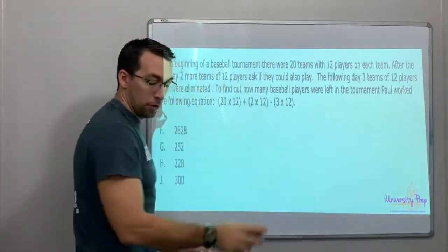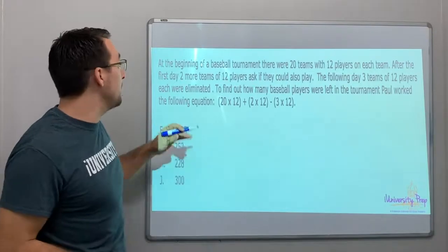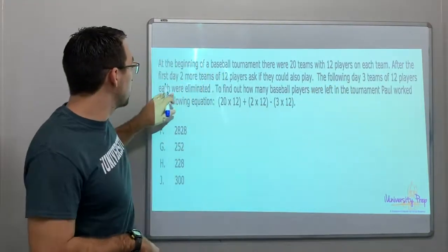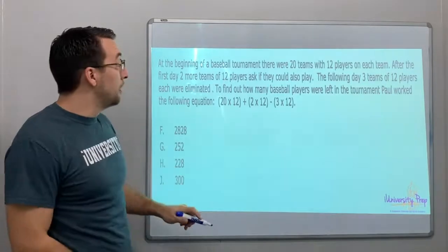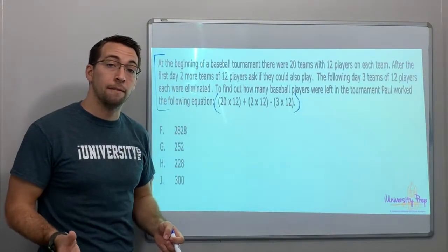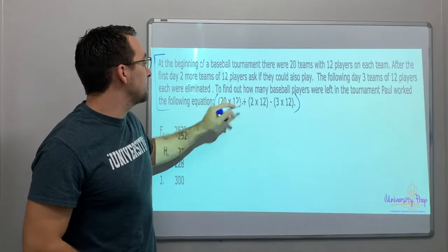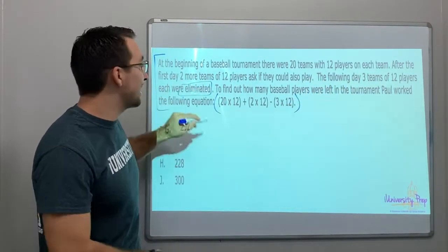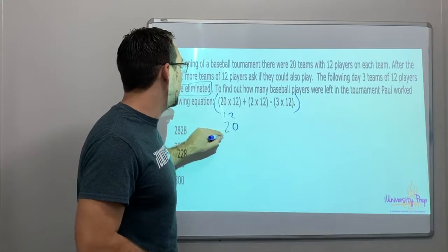Parentheses come first — groupings come first. Word problem: At the beginning of a baseball tournament there were 20 teams with 12 players each. After the first day, 2 more teams of 12 players joined. The following day, 3 teams of 12 players were eliminated. They gave us the equation: 20 times 12, plus 2 times 12, minus 3 times 12.